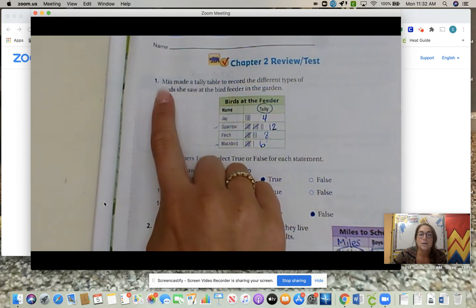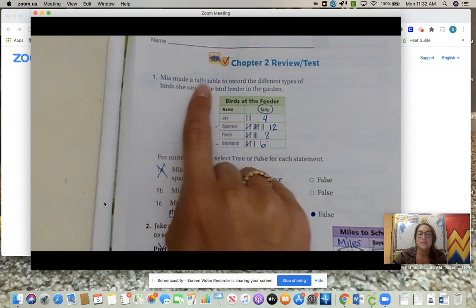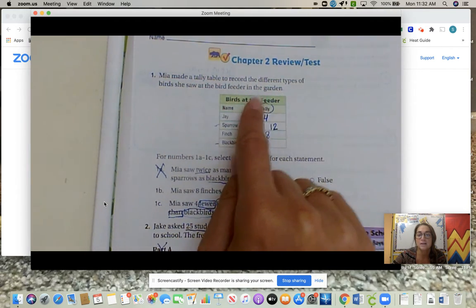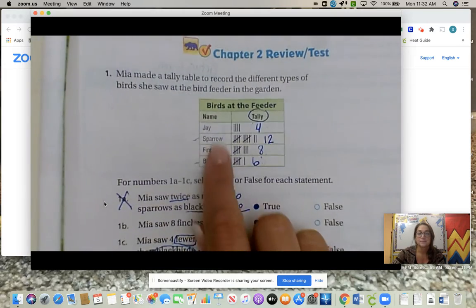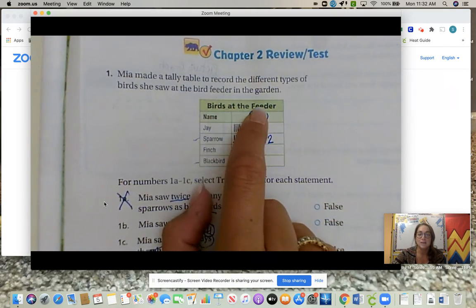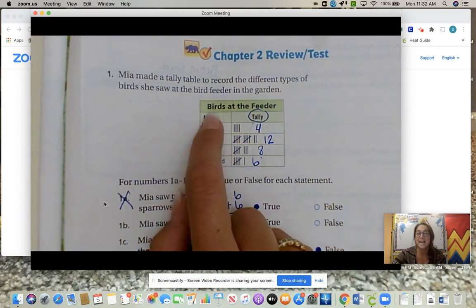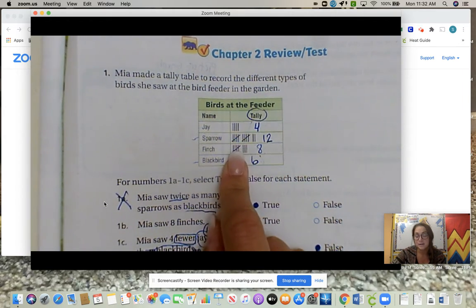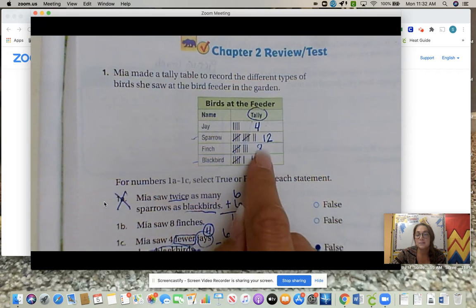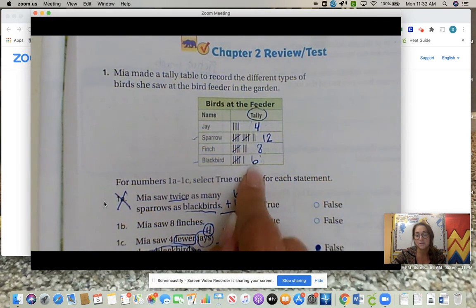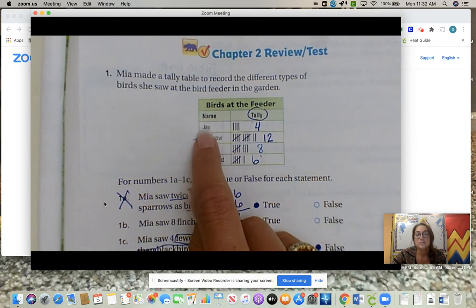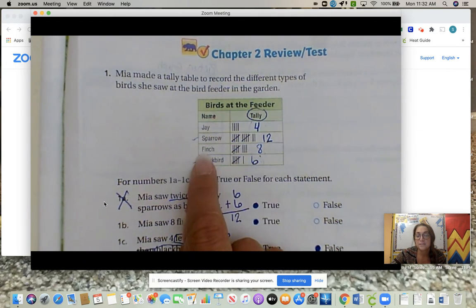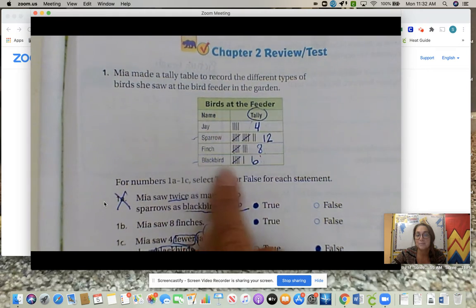Number one: Mia made a tally table to record the different types of birds she saw at the bird feeder in the garden. We have birds at the feeder, that's our title. The name is the category, so these are the names of the birds, and it is a tally chart. We always want to write the number of the tally next to it so it's easier to work with. Jays we have four, Sparrows 12, Finches eight, and Blackbirds six.